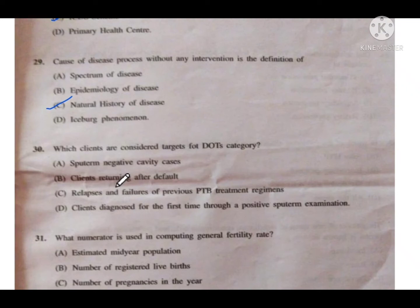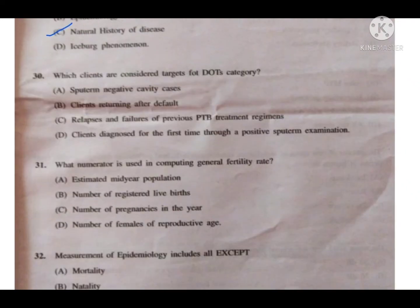Spectrum of disease refers to the range of manifestations and severity in illness. The iceberg phenomenon is the situation where the large percentage of the population affected by a disease is hidden from view — undetected cases.